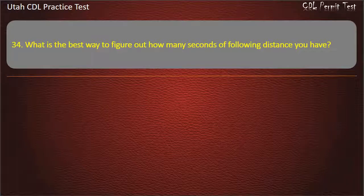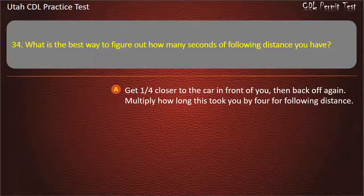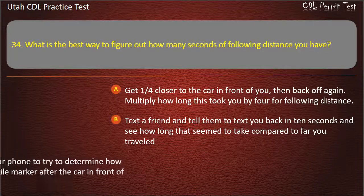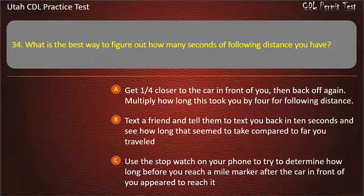Question 34. What is the best way to figure out how many seconds of following distance you have? Get one-fourth closer to the car in front of you, then back off again, then multiply how long this took by 4. Text a friend and tell them to text back in 10 seconds and see how far you traveled. Use the stopwatch on your phone to try to determine how long before you reach a mile mark after the car in front of you appeared to reach it. Wait until a vehicle passes a shadow or landmark and count the seconds until you pass it. Answer: Wait until a vehicle passes a shadow or landmark and count the seconds until you pass it.